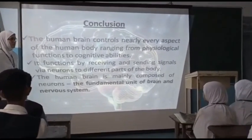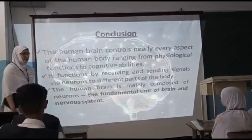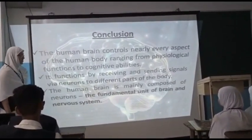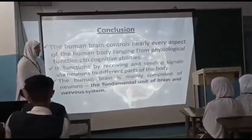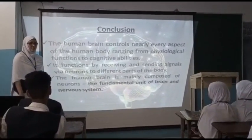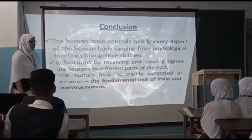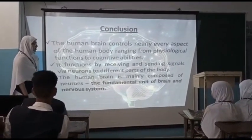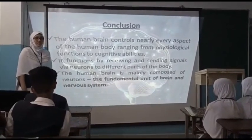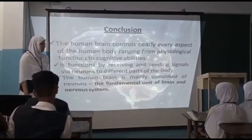The human brain controls nearly every aspect of the human body, ranging from physiological functions to cognitive abilities. It functions by receiving and sending signals via neurons to different parts of the body. The human brain is mainly composed of neurons, which are the fundamental unit of the brain and nervous system.